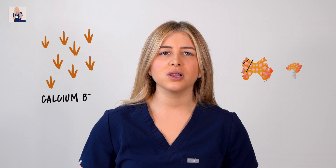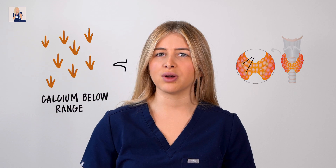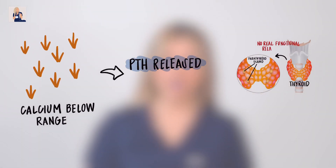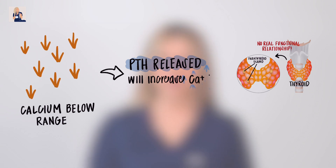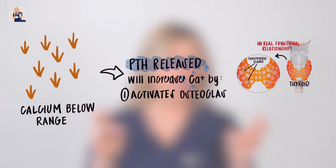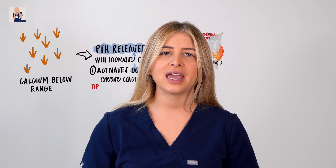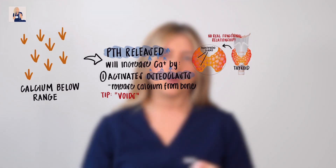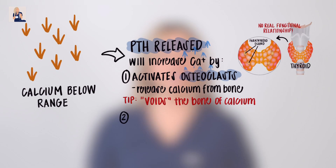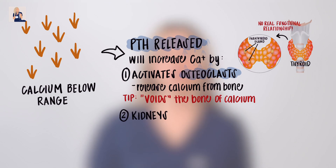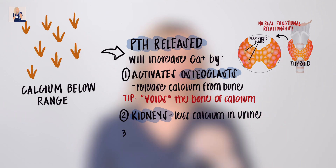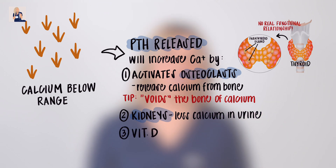When calcium levels fall below normal range, the parathyroid gland releases PTH in response. This hormone then does three main things to increase calcium concentration in the bloodstream. Number one, PTH activates cells in our bones called osteoclasts to release calcium from the bone into the blood. Number two, PTH acts with the kidneys so less calcium is filtered in our urine. And number three, PTH activates vitamin D in our intestines to absorb calcium into the blood.